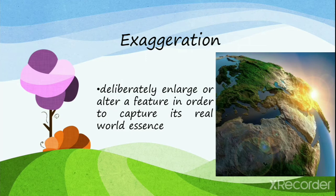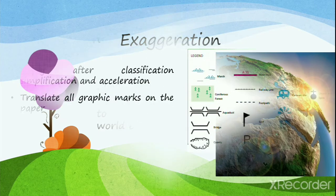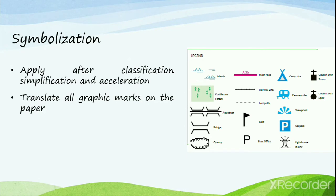After simplification we go for the exaggeration process. When we use exaggeration, we deliberately enlarge or alter a feature in order to capture its real-world essence. Sometimes we exaggerate roadways or settlements to show the density or depth of that phenomenon. For example, if we want to map a meandering stream at a smaller scale using only simplification, the real essence will not be felt for a small meandering part of a large river — hence we exaggerate that part to convey its real essence.